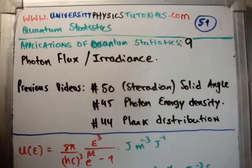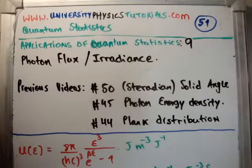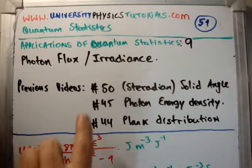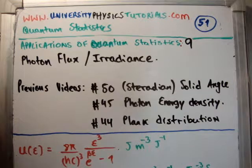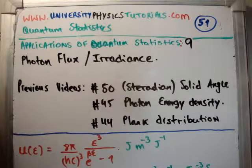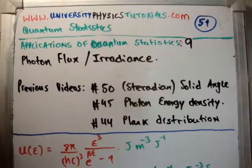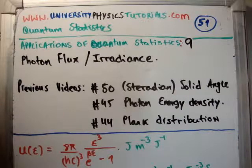The videos you need to look at in order to understand this are as follows. Number 50, I discussed the steradian or the solid angle, and also the polar or spherical coordinates. Number 45, I talked about the photon energy density, and I'll do a recap of that in a moment. And finally, in video number 44, I derived the Planck distribution.